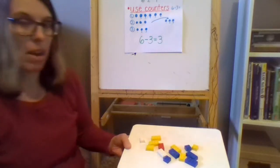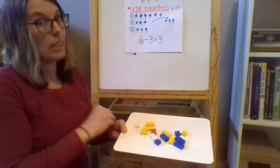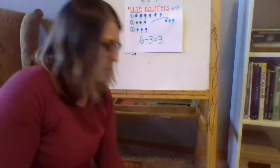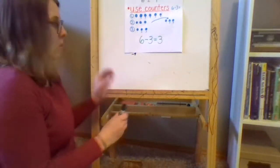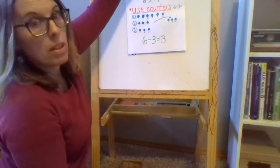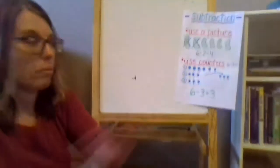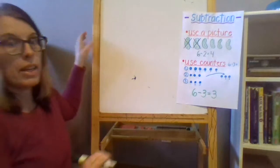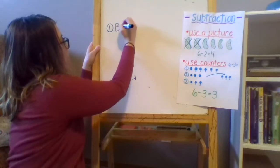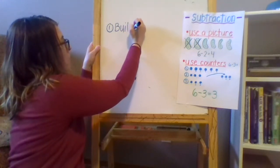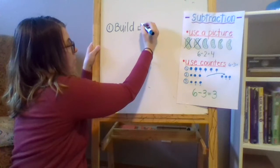So here's what's going to happen. You are going to build things and then subtract pieces and write equations. So step number one, and I'll write my steps right on the board so you can see them like we often do at school. Step one, build something. So since I'm using Legos, I'm going to use my Legos to build something.